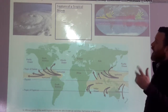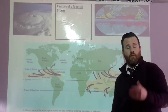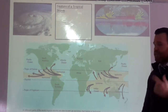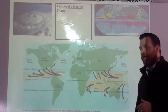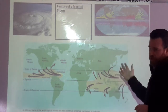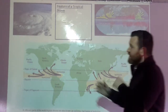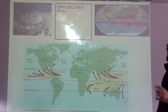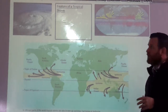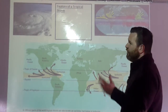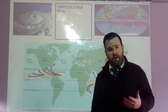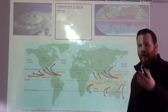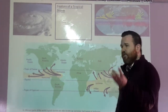If we start off with the features of a tropical storm — when we're talking about tropical storms, we're talking about hurricanes, cyclones and typhoons. We can talk about the features being very strong winds, heavy rainfall, and a period of low pressure — a low pressure weather system.